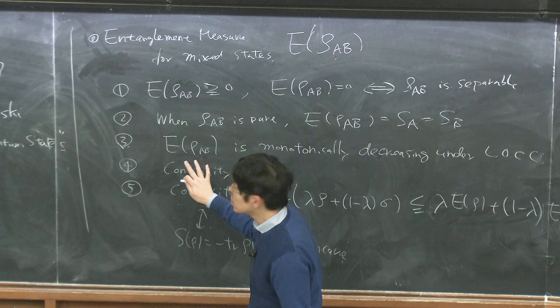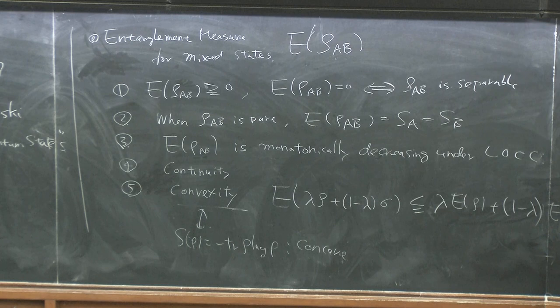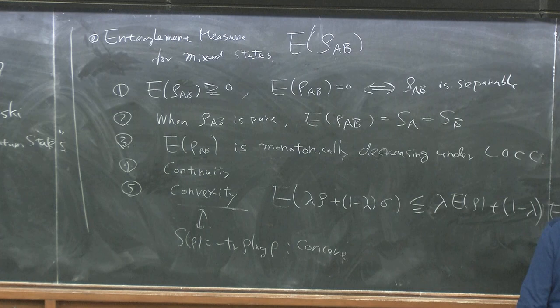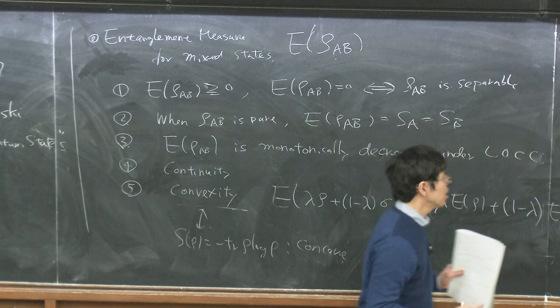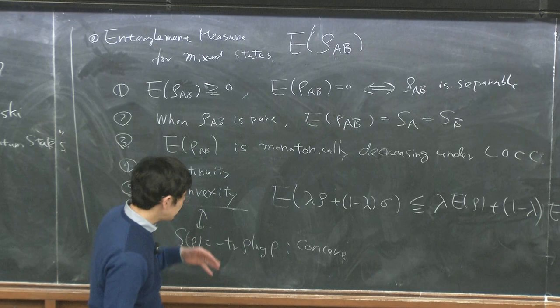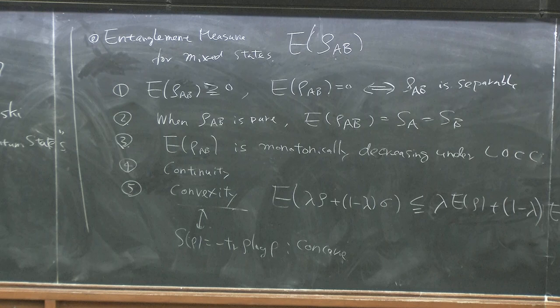Continuity means if we change the density matrix slightly, this quantity also changes slightly. There are some more mathematical formulations. One can find examples where a smaller change gives a very large entropy, which is the reason von Neumann entropy is very special. The previous argument about LOCC reversibility and entanglement is defined only in terms of von Neumann entropy, and linear entropy doesn't appear in that context.